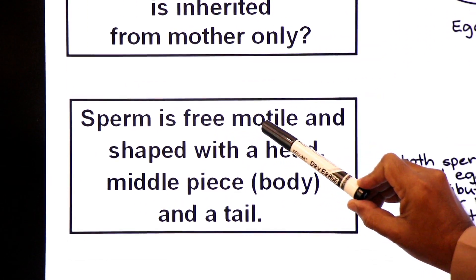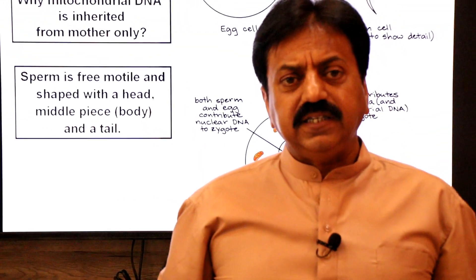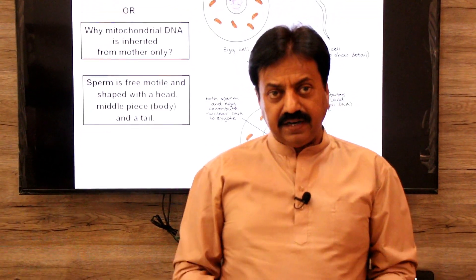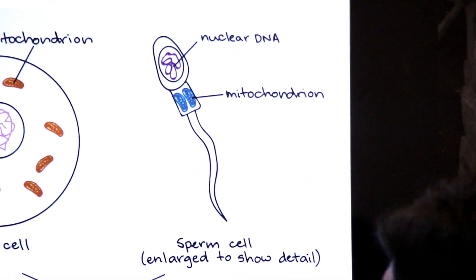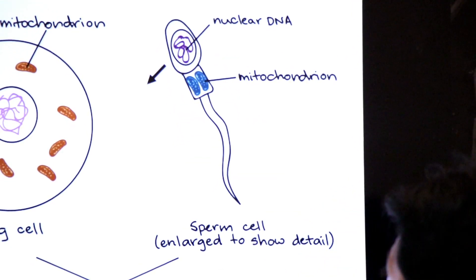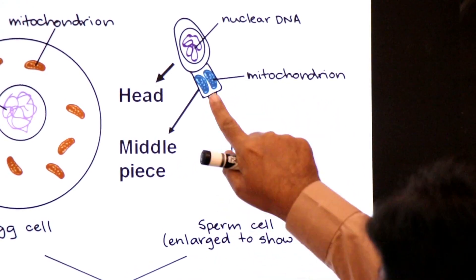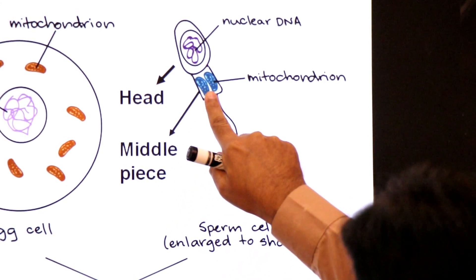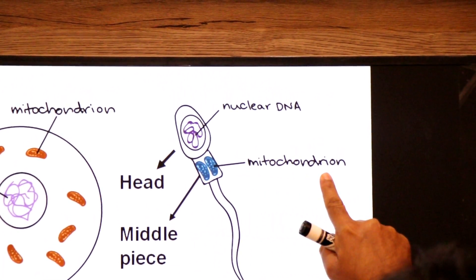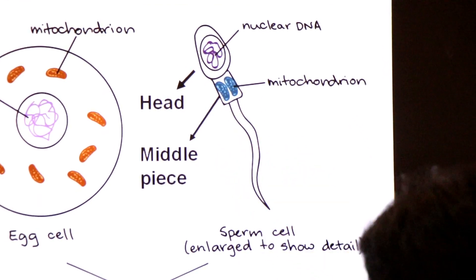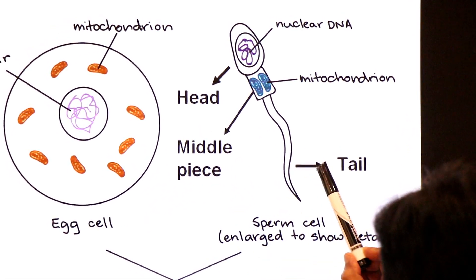The sperm is free, motile, and shaped with a head, middle piece, body, and tail. The three parts of the sperm are: head region, middle piece region, and tail region.